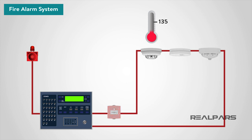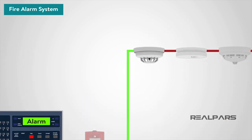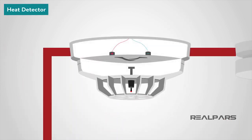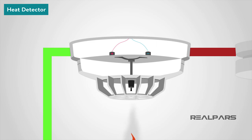A heat detector can either work on a fixed temperature basis, where it will trigger an alarm if the temperature exceeds a preset value, or they can work on the rate of change in temperature. Commonly, heat detectors work in a similar way to an electrical fuse. The detectors contain a eutectic alloy, which is heat sensitive. When a certain temperature is reached, the alloy turns from a solid to a liquid, which in turn triggers the alarm.